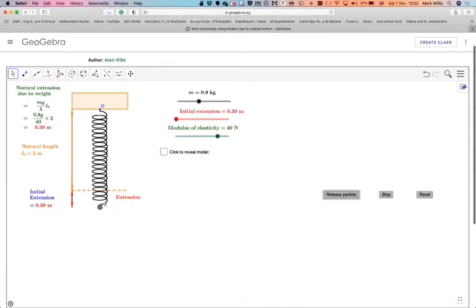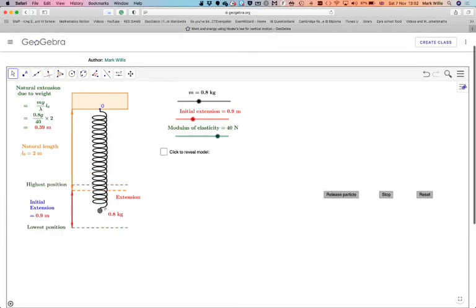So let's make the extension a little bit more. Let's just stop it and reset it. So let's make the initial extension a little bit more, something like 0.9. If we leave the particle, then we get that the spring will oscillate, go up to a highest position and then back down to a lowest position.